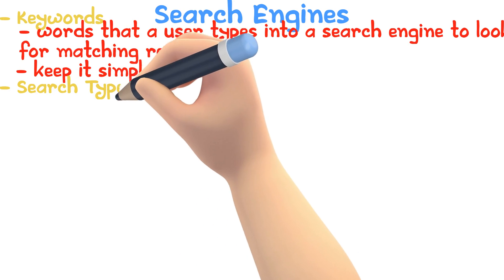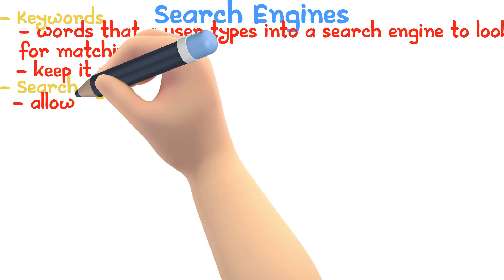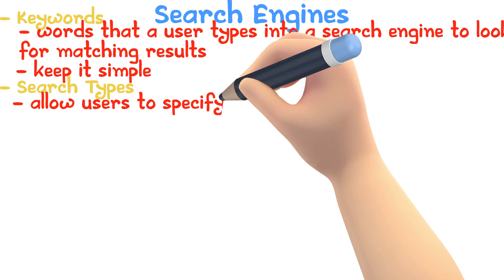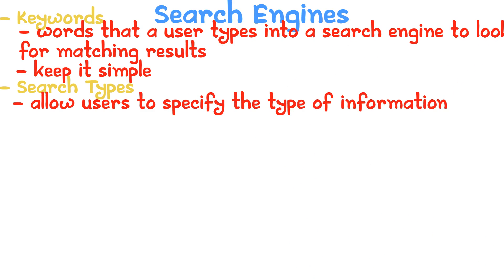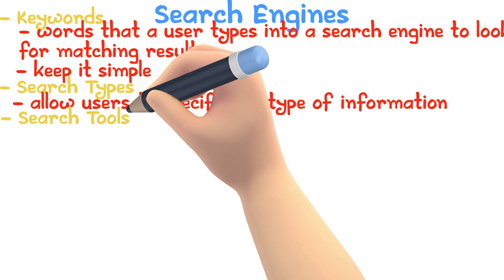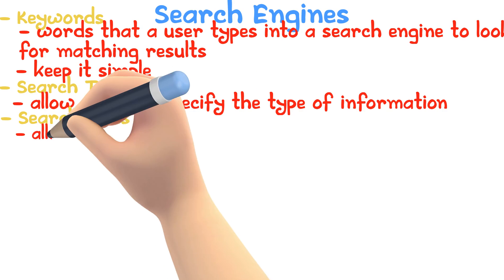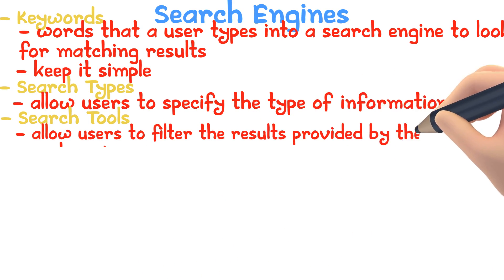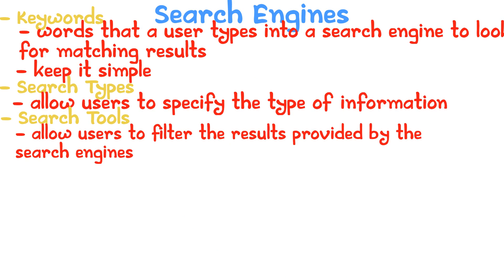Search types: most search engines allow users to specify the type of information. For example, you may be able to choose images, then vector or clipart, and so on. Search tools: most search engines allow users to filter the results provided by them. For example, you can filter by date, region, or language.